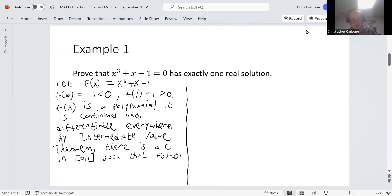Which is going to be a solution. So this shows that there is a solution. To show that there is exactly one real solution, we're going to do this by contradiction.